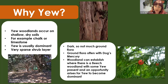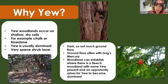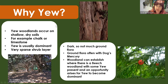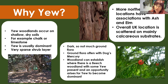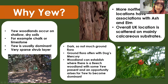Underneath yew there's a very sparse shrub layer and sparse ground flora — yew trees really do block out the light, so there's not much on the ground floor, often just dog's mercury. Sometimes these yew woodlands occur where you've got a mix of yew and beech — beech falls or is felled and yew gets the opportunity to dominate an area. In more northerly locations there are associations with ash and witch elm, and overall the UK distribution is mainly on calcareous substrates.